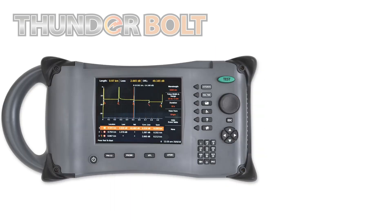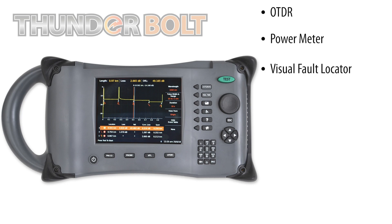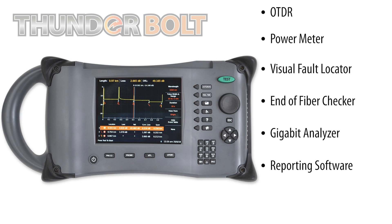The Thunderbolt has 7 critical fiber optic tests: an OTDR, a power meter, a visual fault locator, an end of fiber checker, a gigabit analyzer, reporting software, and an optional connector inspection probe. So let's go over all these applications.